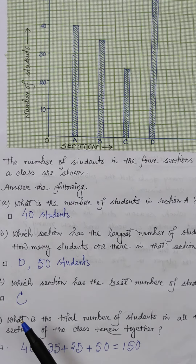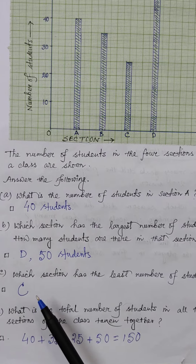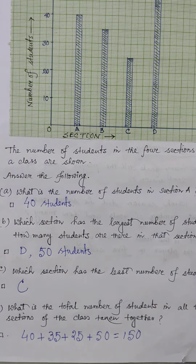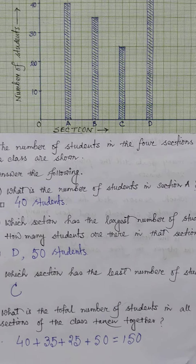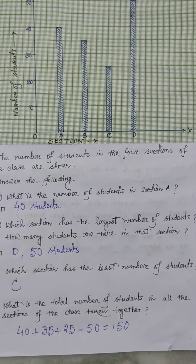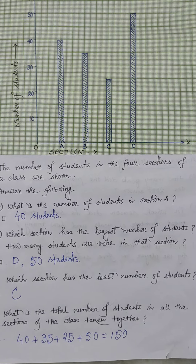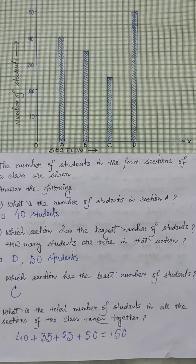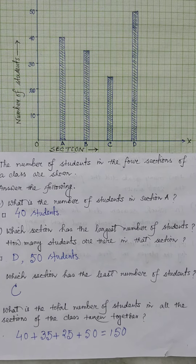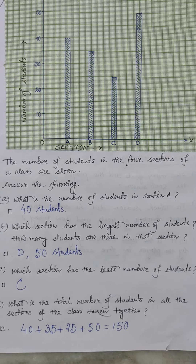Question c: Which section has the least number of students? In which section is the height of the bar minimum? Section C — so section C is the answer.